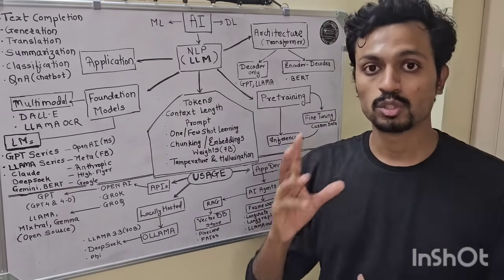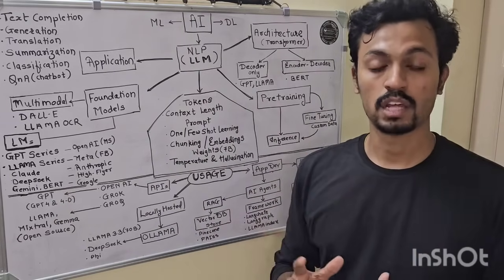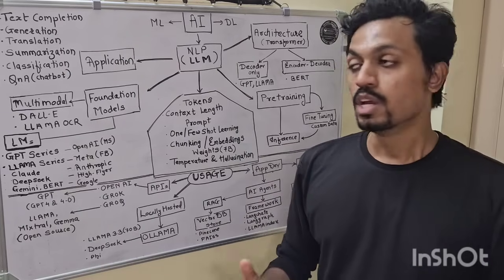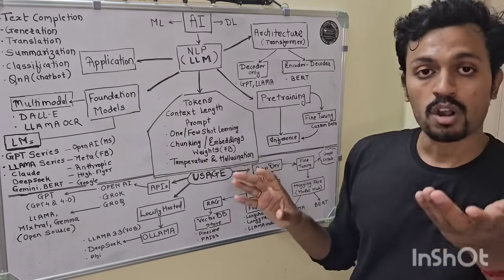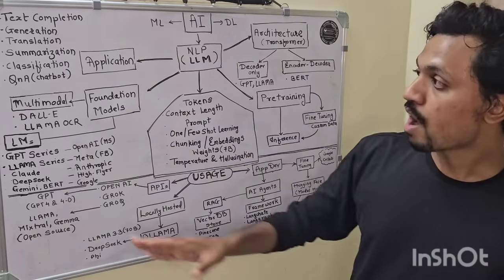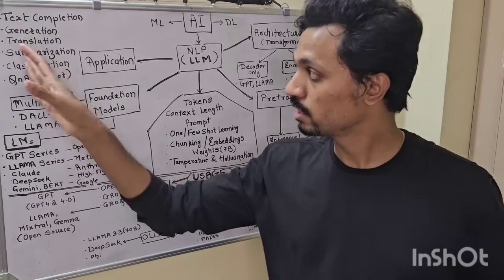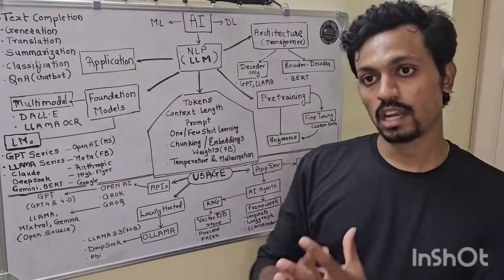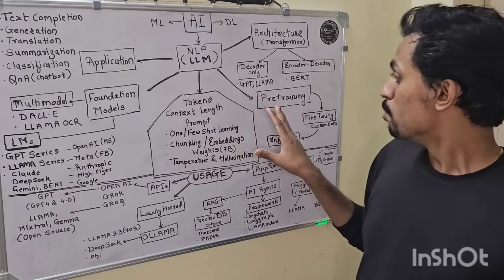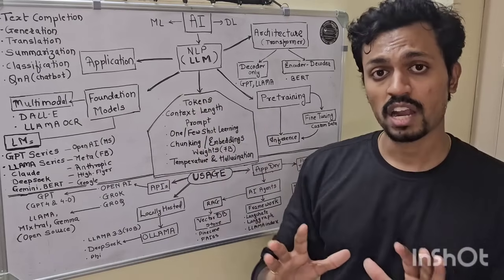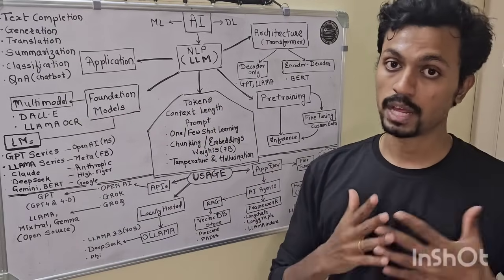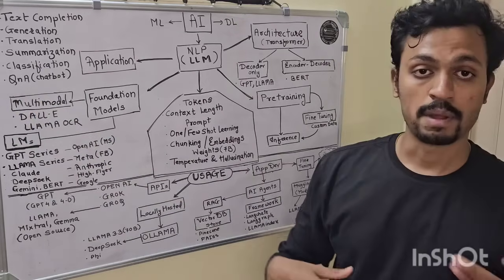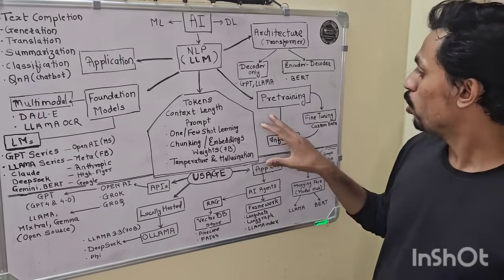Pre-training costs millions of dollars and requires huge computation resources — you need a data center, not just a regular computer. Once trained, the model can handle tasks like summarization, completion, and Q&A. You choose the application, and the model is pre-trained for it.